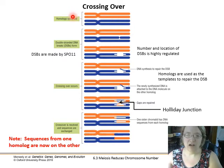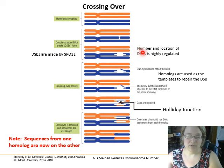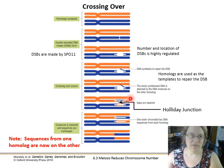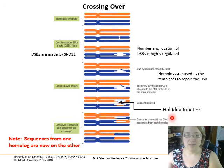When we get to crossing over, our synapse is formed and the homologs have lined up. Then we get double-stranded DNA breaks, abbreviated as DSBs. A specific enzyme, SPO11, causes these double-stranded DNA breaks, and their location is highly regulated — not random. They tend to occur in the same places on the same chromosomes. DNA synthesis then occurs and the homolog is used as the template to repair the break. The very point of the swap is called the Holliday junction, and when the DNA is repaired you end up with one sister chromatid having some DNA sequences from each homolog.